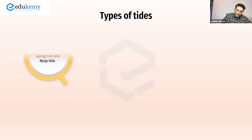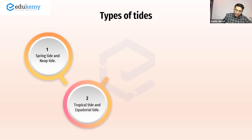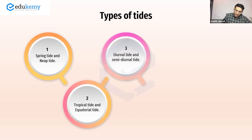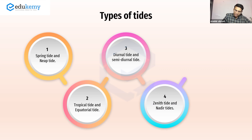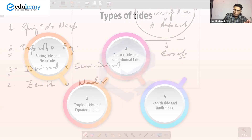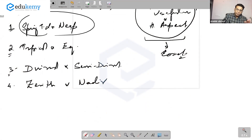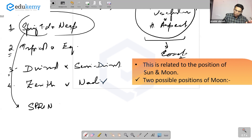We have spring tide and neap tide. We have tropical tides, equatorial tides. We have diurnal tides and semi-diurnal tides. And then we also have zenith tides and nadir tides. Now, spring tides and neap tides — I hope you all know this is related to the position of the sun and moon.